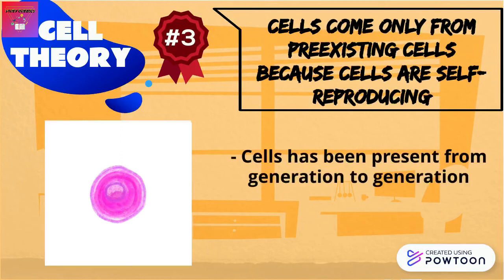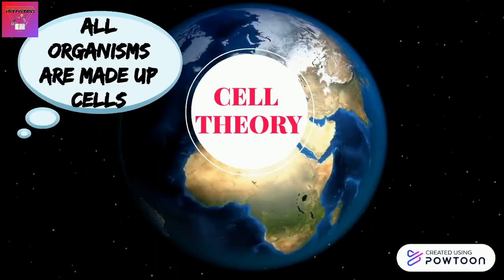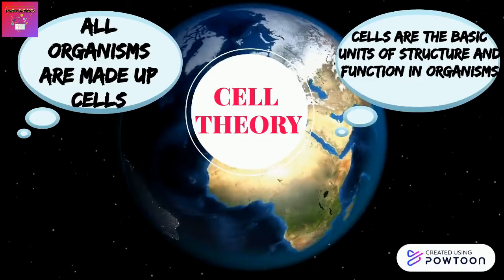To summarize the three tenets of cell theory: firstly, all organisms are composed of cells; secondly, cells are the basic units of structure and function in organisms; and lastly, cells come only from pre-existing cells because cells are self-reproducing.